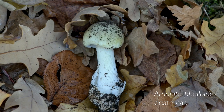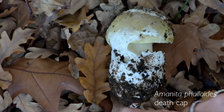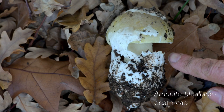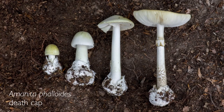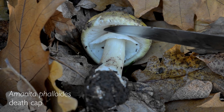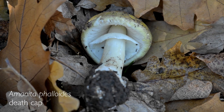The stipe is generally equal in diameter along its length, with a prominent bulbous base contained within a sac-like membranous volva. The stipe is typically white, or tinged yellowish-green, sometimes with zigzag banding. Also note the white membranous partial veil, that forms a skirt-like annulus on the upper stipe.